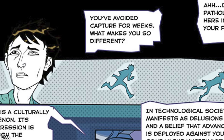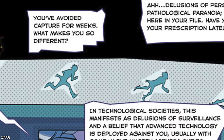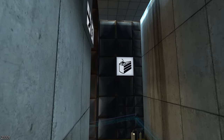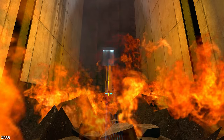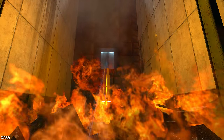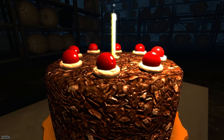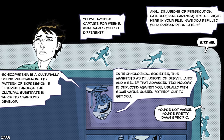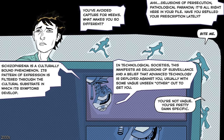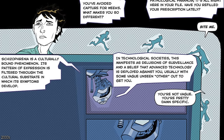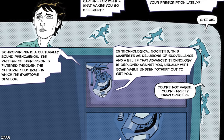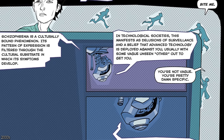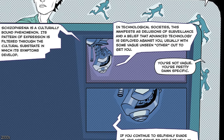Now weeks after GLaDOS's takeover of the facility, Doug continued to hide from the murderous robot as he watched his co-workers die during testing. Even if the scientists followed her orders and successfully made it through the testing track, it always ended the same way — they were tricked into entering an incinerator with the promise of cake. The cake had previously been used to incentivise Aperture test subjects, but now it had a darker meaning. Doug was naturally paranoid as a result of his schizophrenia, and without access to medication over this period, GLaDOS attempted to lure him out of maintenance areas by playing on this.